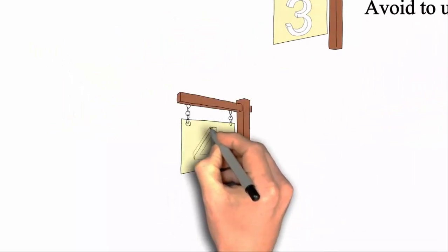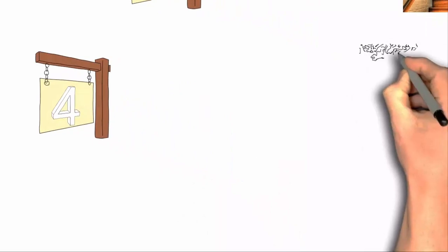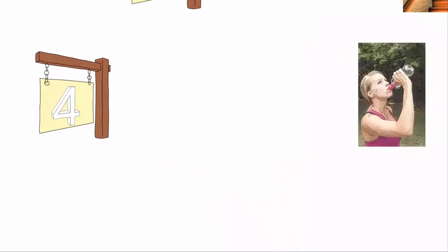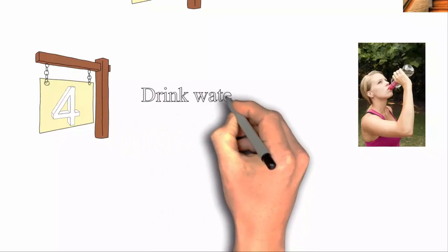The fourth one is drink water frequently. This helps for good blood circulation and dehydration causes premature delivery, so don't make dehydration condition. Please drink water.